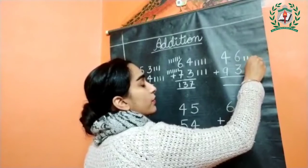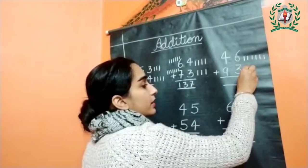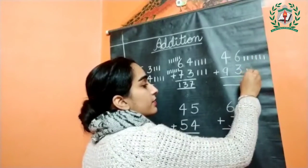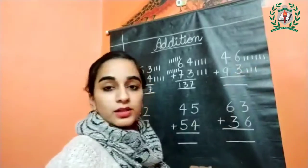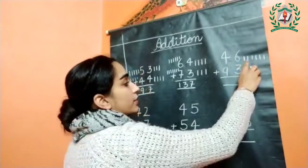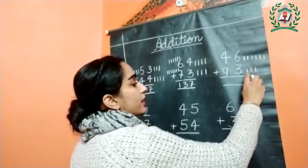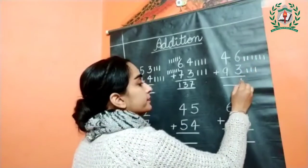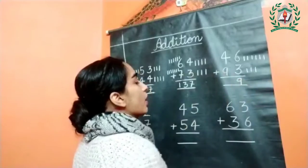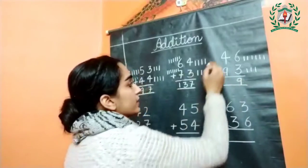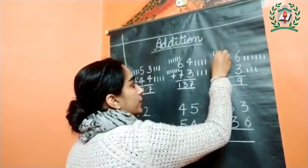Next, this is number six — draw six lines: one, two, three, four, five, and six. And then three lines: one, two, and three. Now add them together: one, two, three, four, five, six, seven, eight, nine.